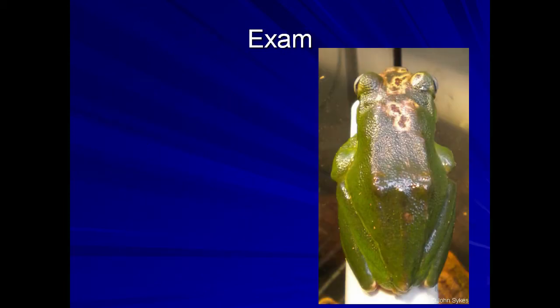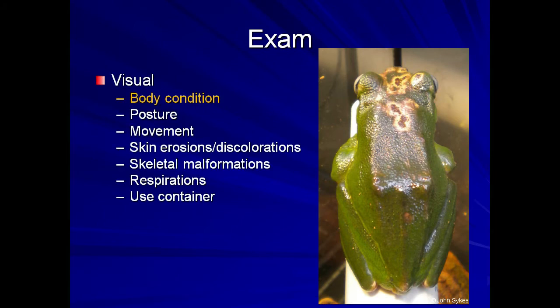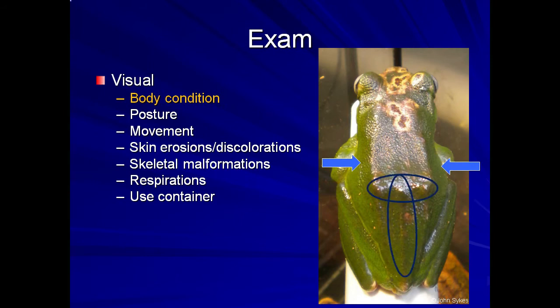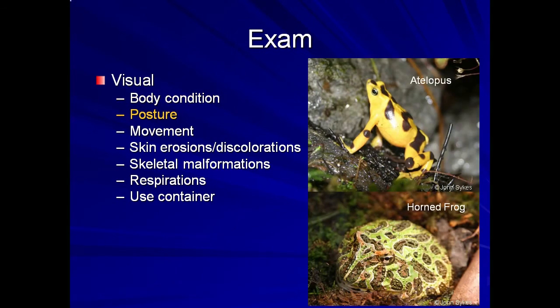The exam consists of both a visual and a physical exam. There is much information that can be learned by first looking at the animal before handling. Body condition should be assessed — this animal is in thin body condition, with visible and prominent vertebrae and pelvic bones. Sometimes it is helpful to look at a conspecific at the same time for comparison, as different species will have different normal body shapes. The animal's posture may give clues to areas of concern or possible environmental problems, and the species' natural history should be taken into account when evaluating posture.